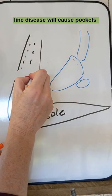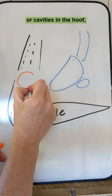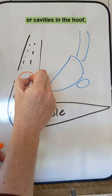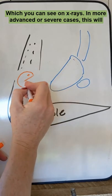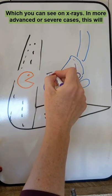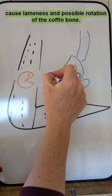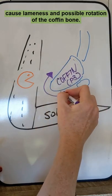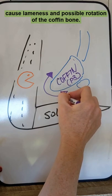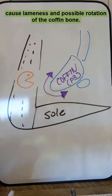White line disease will cause pockets or cavities in the hoof, which you can see on x-rays. In more advanced or severe cases, this will cause lameness and possible rotation of the coffin bone.